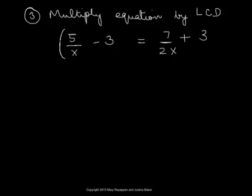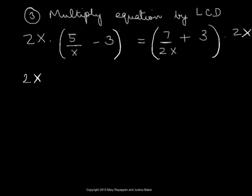So let us wrap the left-hand side as well as the right-hand side and multiply by the LCD which is 2x. We distribute the 2x onto every term inside the parenthesis on both sides.